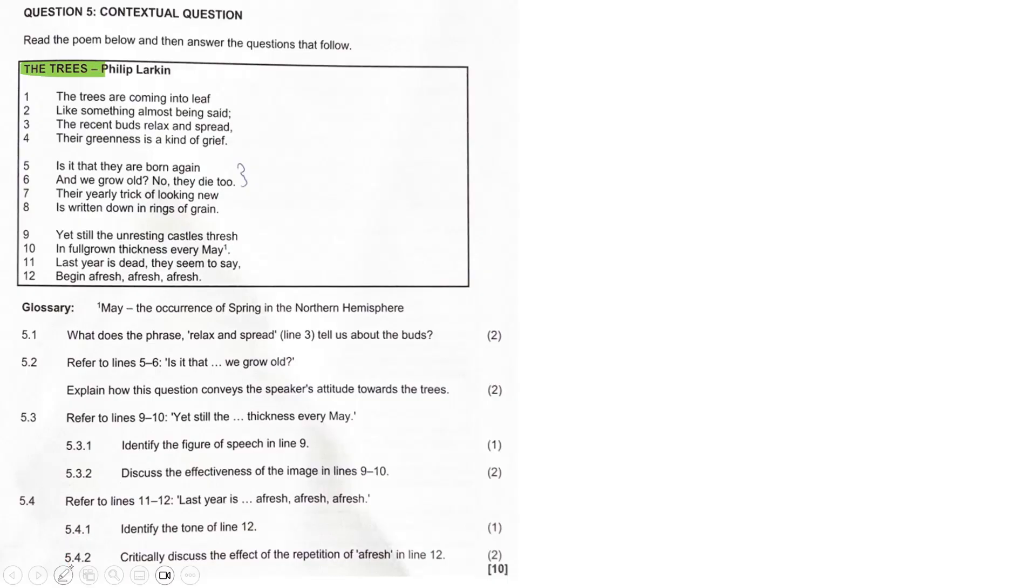It's a quick line by line analysis here. Lines one to four, Larkin describes simply put the arrival of spring. The trees are growing new leaves and their renewal feels like a form of communication or expression from nature, something rather hopeful and fresh.